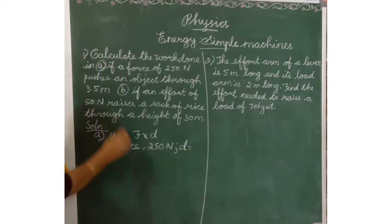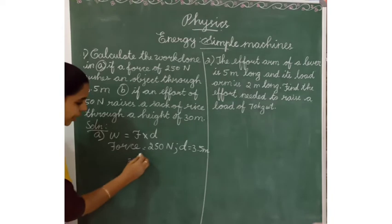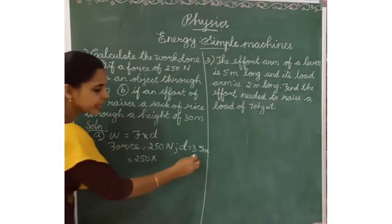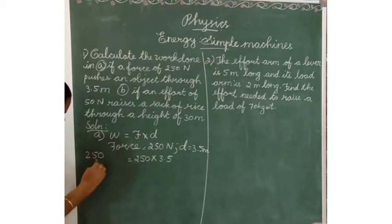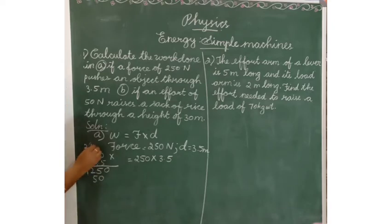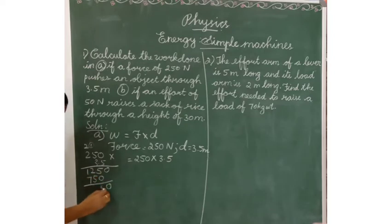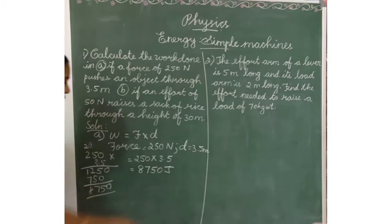Substituting the values: Work done = 250 × 3.5. Multiplying these: 250 × 3.5 = 875. The answer is 8,750 joule. The unit of work done is Joule.